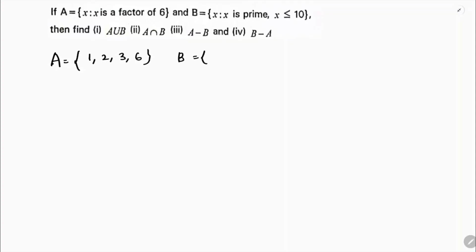And B: x such that x is a prime less than or equal to 10, so you'll get 2, 3, 5, 7. Now you need to find A union B, A intersection B, A minus B, and B minus A.